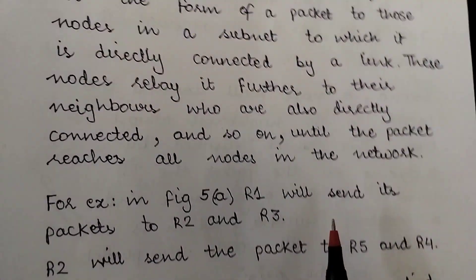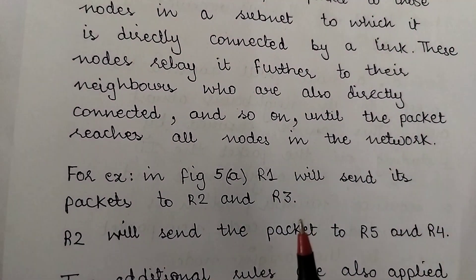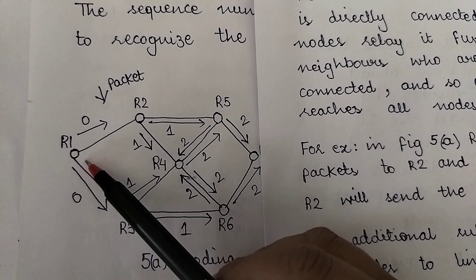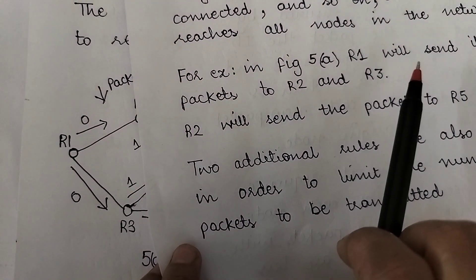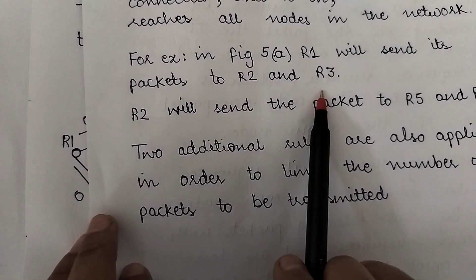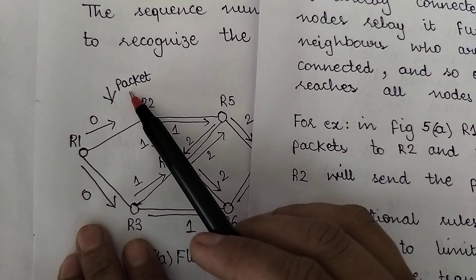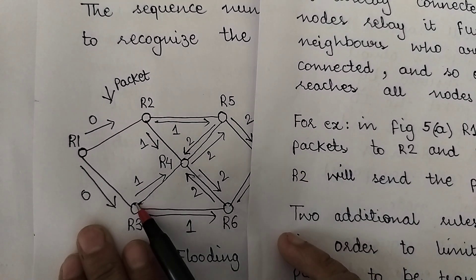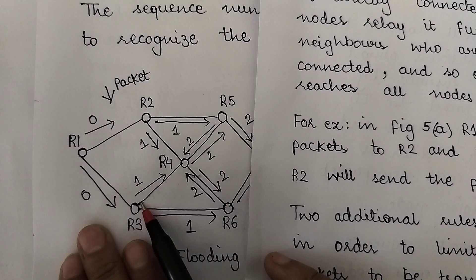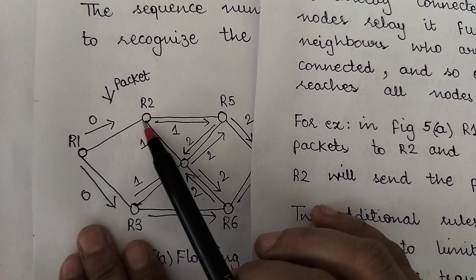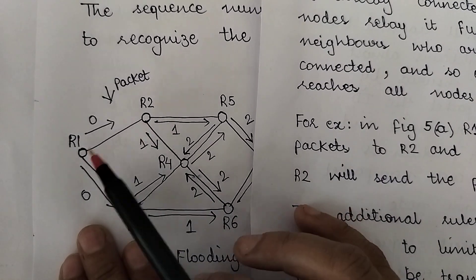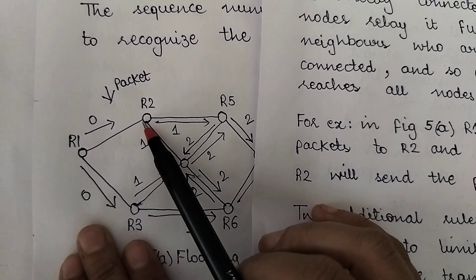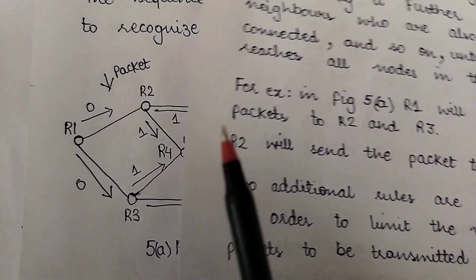Looking at figure 5a, r1 is a router represented by a node. R1 will send its packet to r2 and r3, because in flooding a node transmits the packet to all nodes directly connected to it via a link. R1 is directly connected to r2 and r3, so it transmits the packet to both.